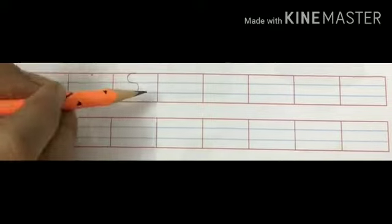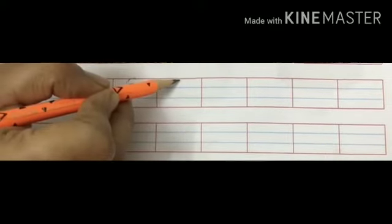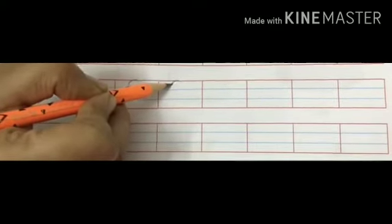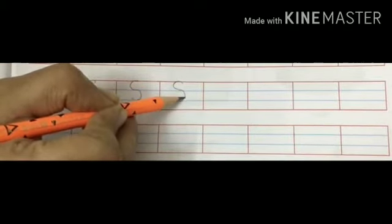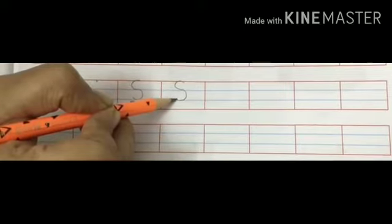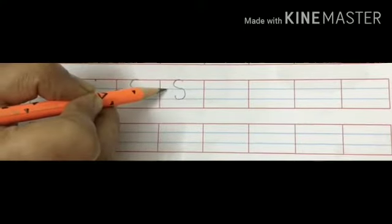Again I will show you how to write letter S. Start from the top red line to the first blue line, make a small curve, then turn your pencil backward and make another curve and here is our letter S.